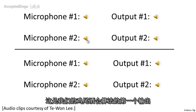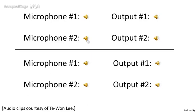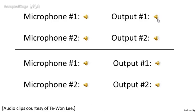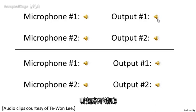The first output of the cocktail party algorithm separates out the English voice: one, two, three, four, five, six, seven, eight, nine, ten. The second output separates out the Spanish voice: uno, dos, tres, cuatro, cinco, seis, siete, ocho, nueve, y diez. Not too bad.